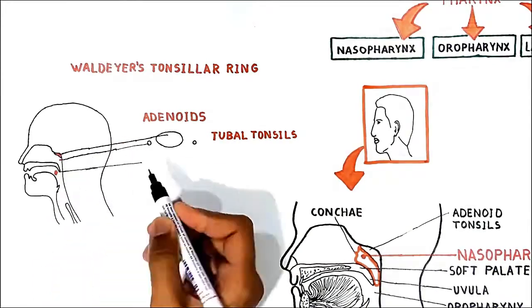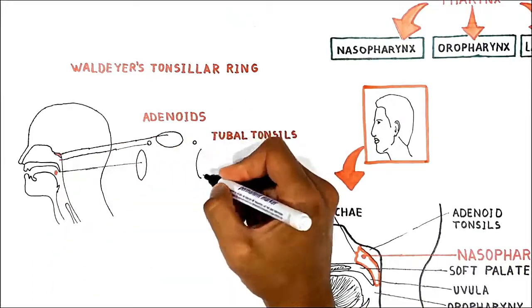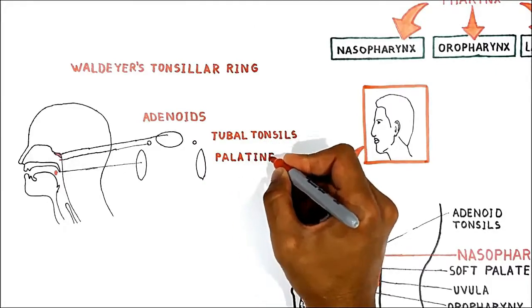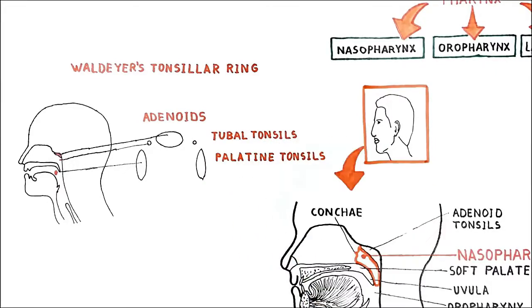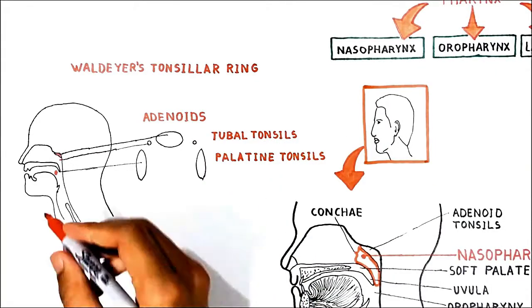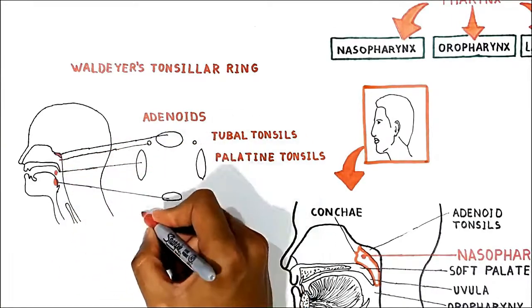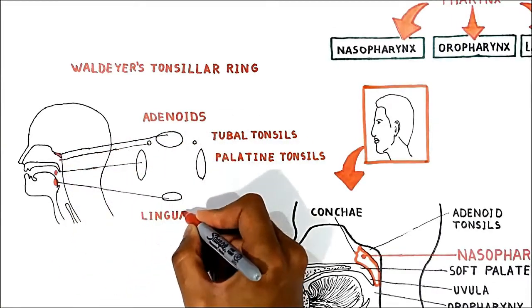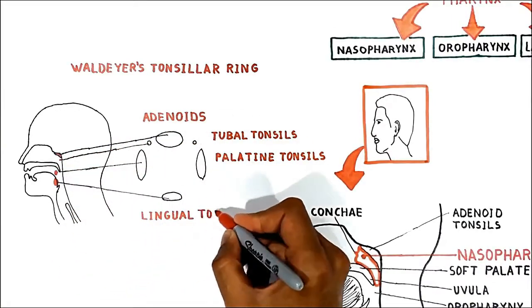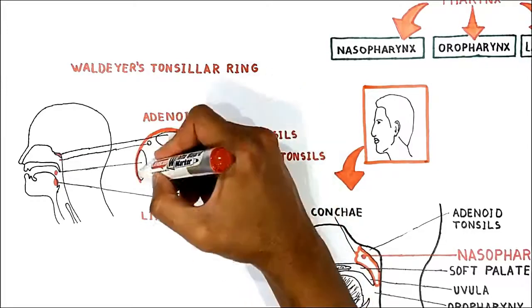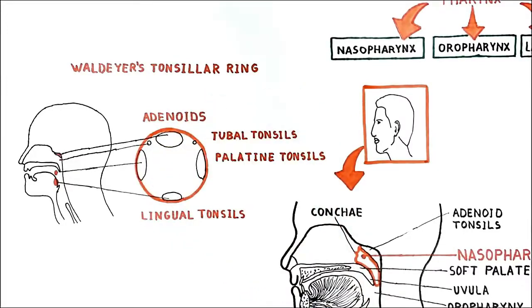It also includes two palatine tonsils, commonly called the tonsils, which are located in the oropharynx, and one or many lingual tonsils which are on the posterior tongue. All of them are part of the immune system.